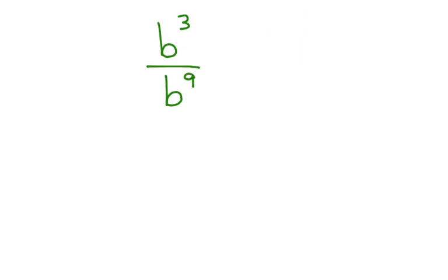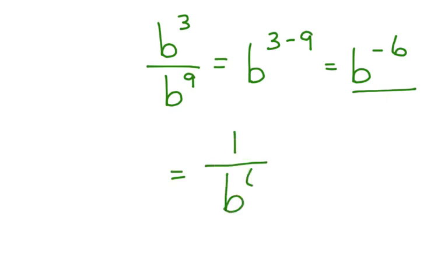Here we have b to the 3rd divided by b to the 9th. So, we can say that this is b to the 3 minus 9, which is b to the negative 6th. I can't leave it like this, though. So, I rewrite it as 1 over b to the 6th.